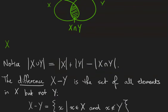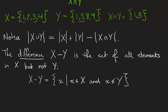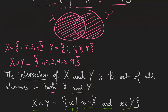For example, let x be the set {1, 2, 3, 4} and y be the set {1, 3, 8, 9}. The intersection is just {1, 3} — the elements that appear in common in both sets. Notice that the cardinality of the union is equal to the size of the first set plus the size of the second set minus the size of their intersection. In our example, x union y has six elements even though x and y each have four. Four plus four is eight, minus two from the intersection gives six.